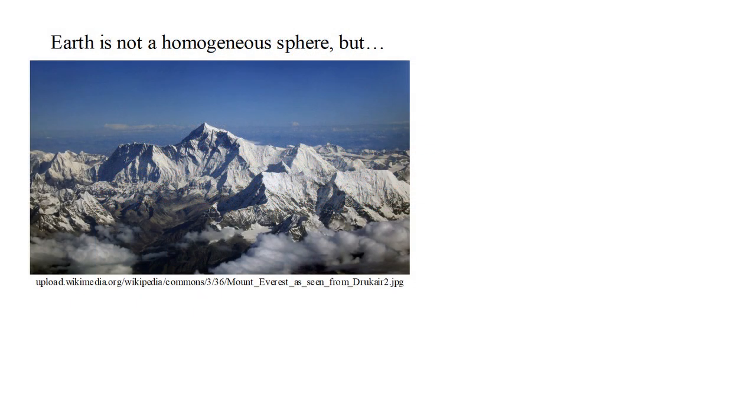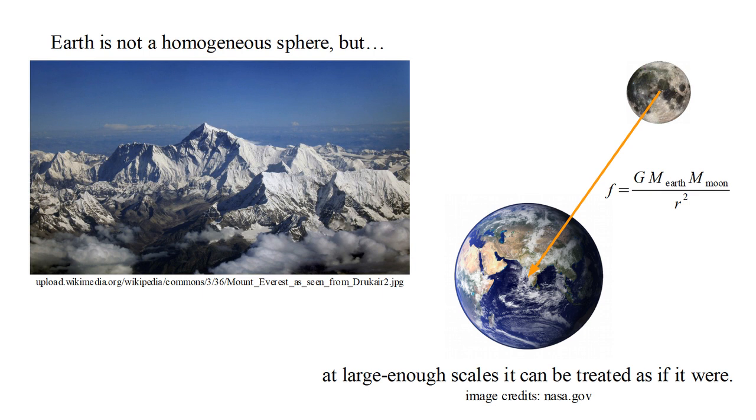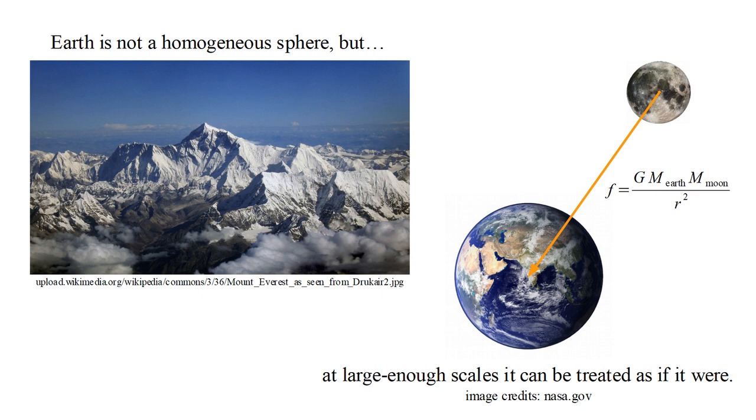An analogy is that Earth is not a homogeneous sphere. Its inhomogeneous, anisotropic surface has a huge effect on weather, the distribution of living organisms, and all aspects of our environment. However, all of that is negligible if we want to calculate the force of attraction between Earth and Moon. At that large of a scale, Earth can accurately be treated as a homogeneous sphere.